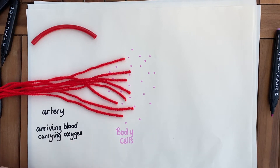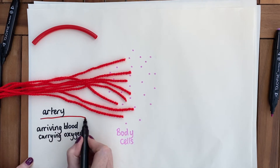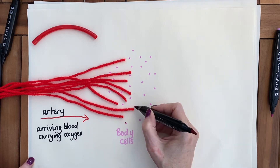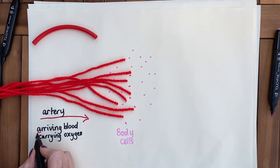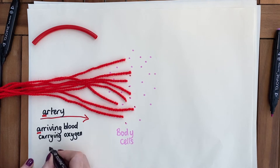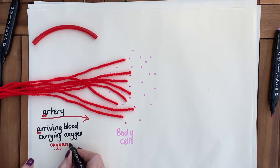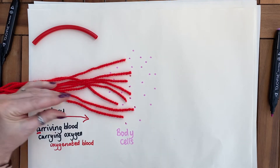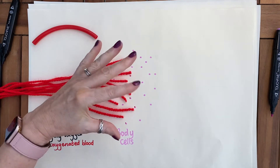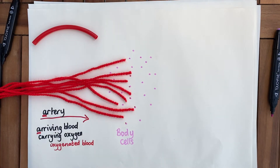In the arteries, blood is arriving to take oxygen to each one of the cells in the body. The artery is coming in carrying oxygen — this is referred to as oxygenated blood. It's coming from the heart, pumping to every single cell in the body at great force.